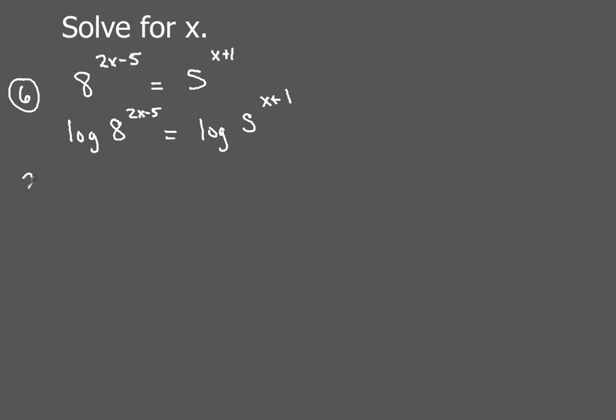You're going to have 2x minus 5, and I want you to put that in parentheses, times log of 8. And that's going to be equal to x plus 1. Again, put that in parentheses, and then log of 5. Now, what we're going to do next is we're actually going to distribute that exponent that we brought down. So when we multiply 2x log 8, we're going to have that minus 5 log 8. And you'll see why here as we go through this in a minute. So that's going to be equal to x log 5 plus just 1 log 5, so we don't have to write the 1.